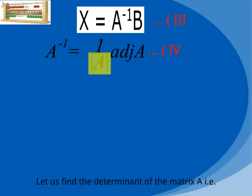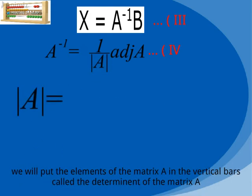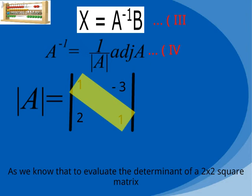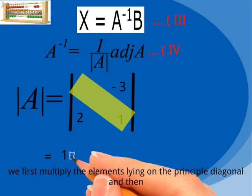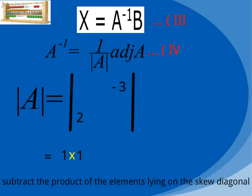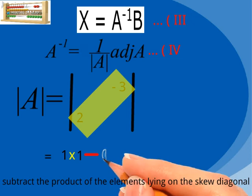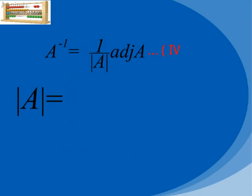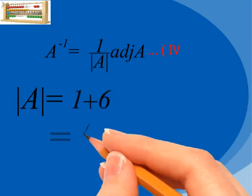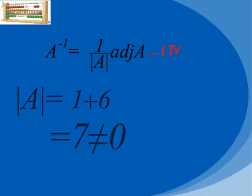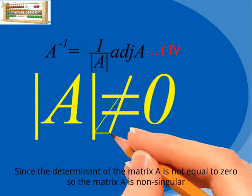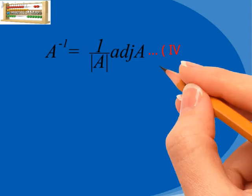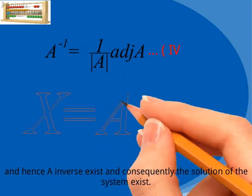Let us find the determinant of matrix A. We place the elements of matrix A in vertical bars. To evaluate the determinant of a 2×2 square matrix, we multiply the elements on the principal diagonal and subtract the product of the elements on the skewed diagonal. That is, 1 times 1 minus negative 3 times 2, giving us 1 plus 6, equal to 7, which is a non-zero quantity. Since the determinant of matrix A is not equal to zero, matrix A is non-singular, A inverse exists, and consequently the solution of the system exists.